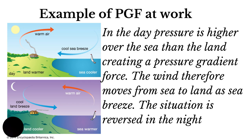A good example of pressure gradient force at work is the formation of sea breeze in the day and land breeze at night. During the day, the land is usually warmer than the sea. Over the sea surface, where it is cooler, pressure is usually higher. Over the land where it is warmer, pressure is usually lower. So winds during the day will blow from the sea, where pressure is high, to the land where pressure is low.